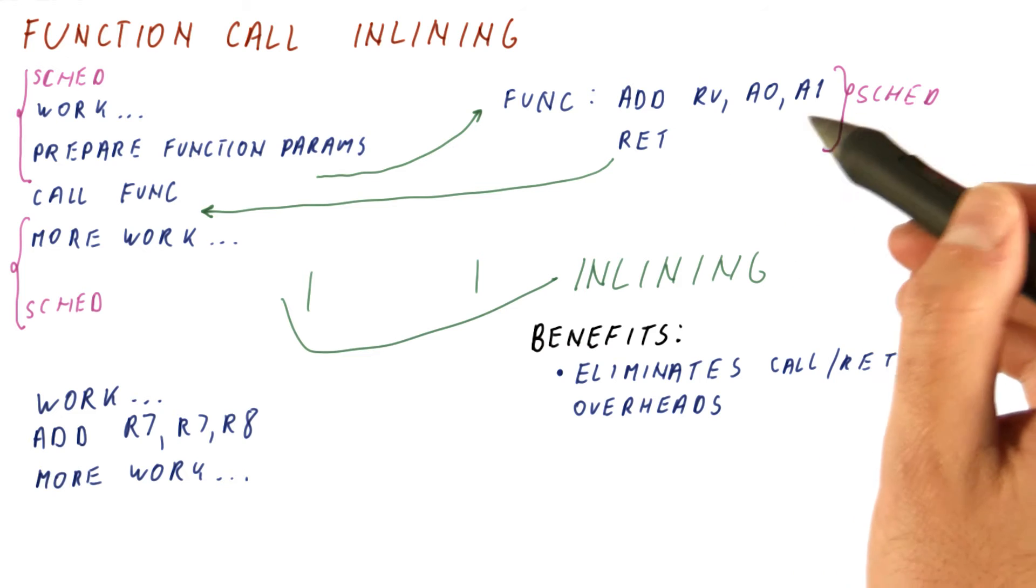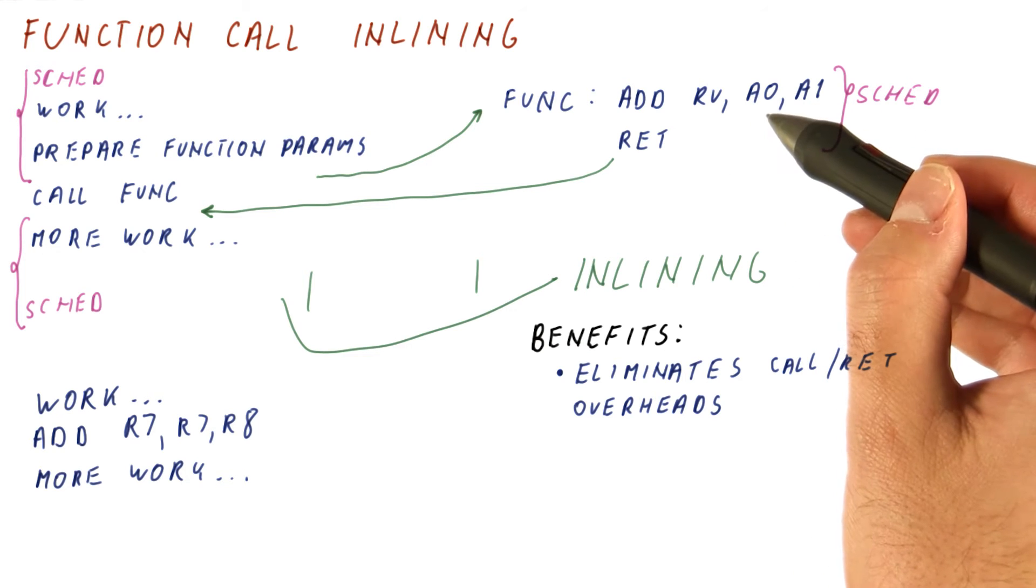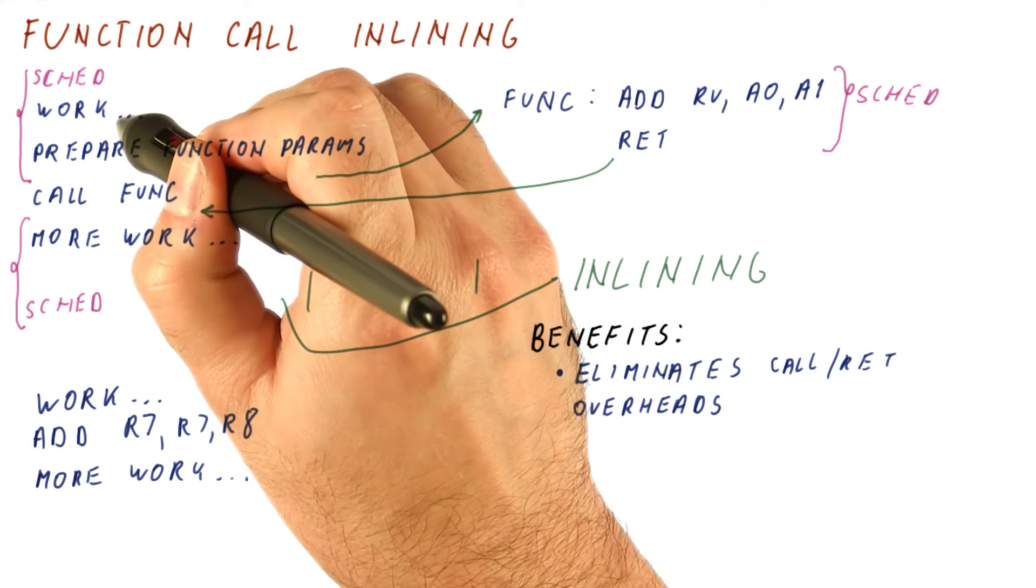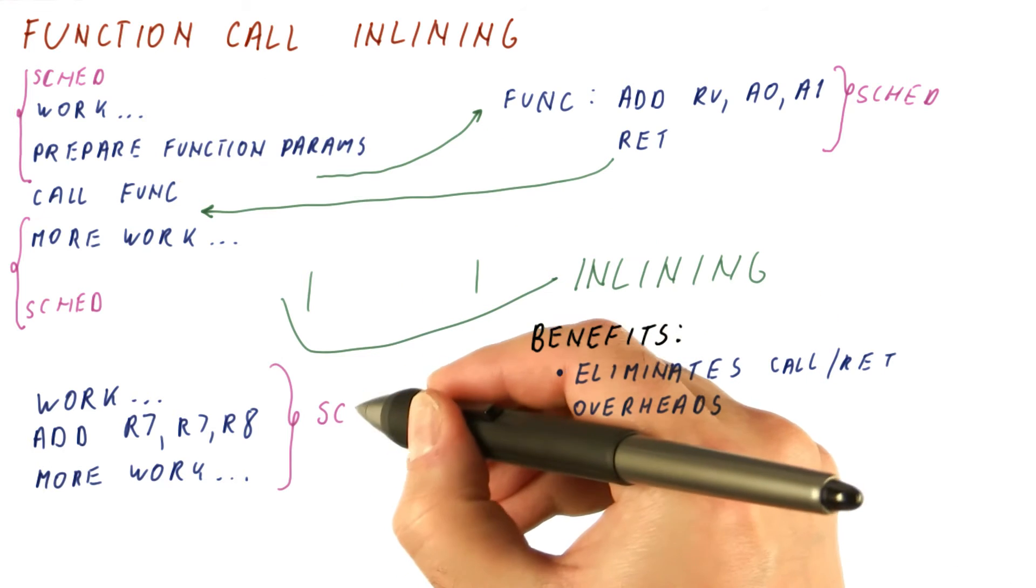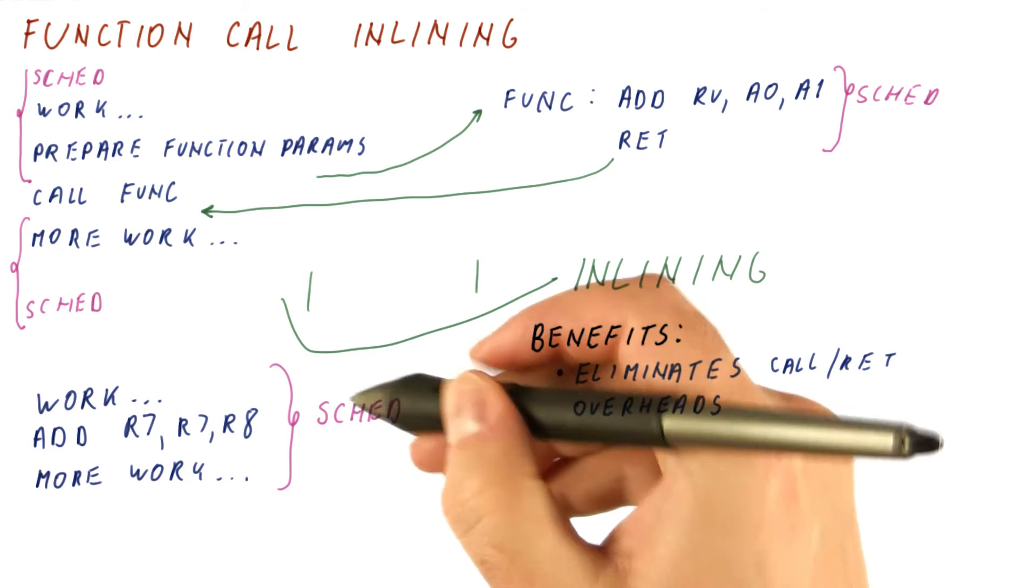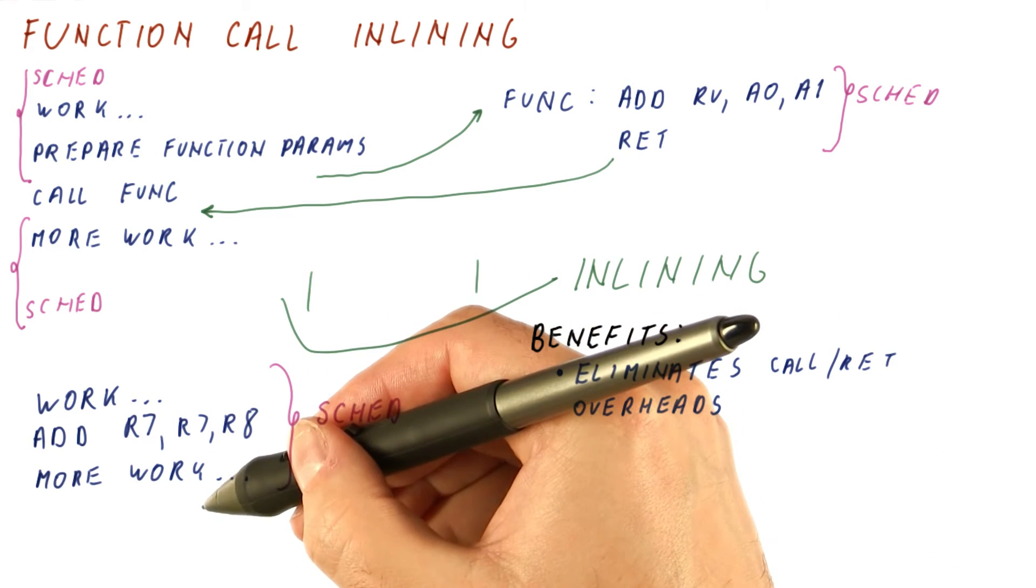for example, take something from here and use it to fill an empty slot here. On the other hand, after inlining, this is just code with no function calls or anything, so now all of this work is schedulable.